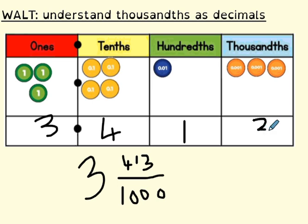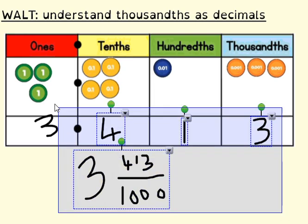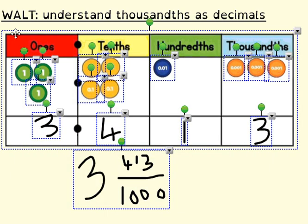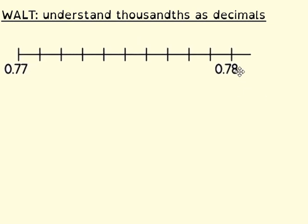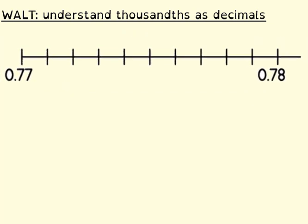First few questions today, you are going to be looking at place values and understanding thousandths as decimals on place value grids like this. Once you've done that, you're going to then move on to looking at thousandths and decimals particularly on number lines. We've looked at number lines quite a bit over the last couple of lessons. We talked about trying to label the intervals and making sure that we know what jumps are to help us with the working out.